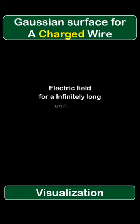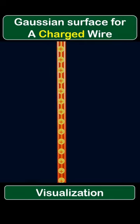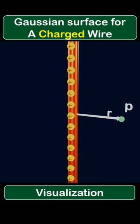Electric field for an infinitely long uniformly charged wire. For this case as well, we first consider a point P located at a distance R from the wire and we will need to imagine a Gaussian surface.